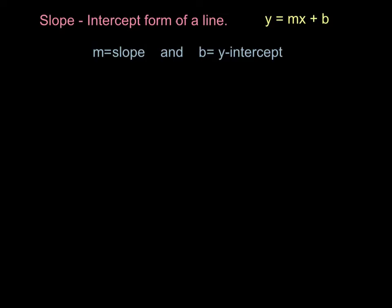Let's have a look at our definition. The slope-intercept form of a line means that the line is going to be given in a format where we can see the slope. We knew from earlier that m is equal to our slope, and the intercept is the y-intercept, so this is the b value — it's the y-intercept of the line.